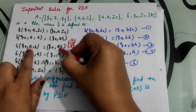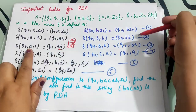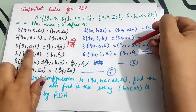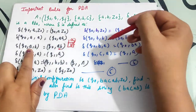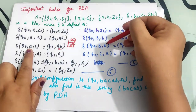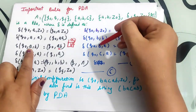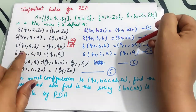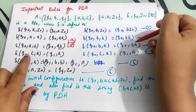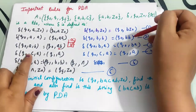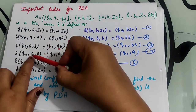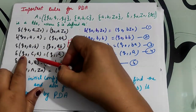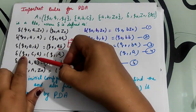So that is why here we write 'ab'. Same concept: if 'a' is already in the stack and you want to insert 'b', write it as 'ba'. Next rule: at q0 initial state, you want to insert 'c' and within the stack is 'a'.